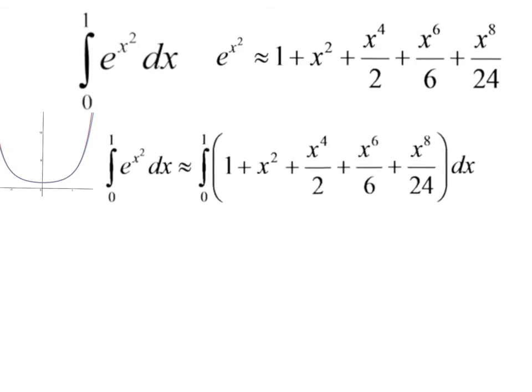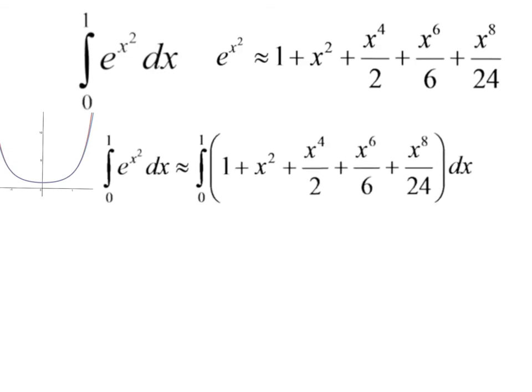So, instead of integrating e to the x squared, why don't I integrate the polynomial that's essentially the same? So, x plus 1/3 x cubed plus 1/10 x to the fifth, and it's all just power rule. Evaluate at 1 and 0. And, if I actually then plug in 1, I get 1.461.